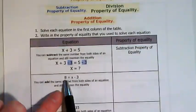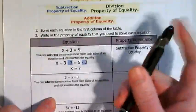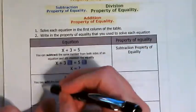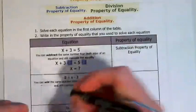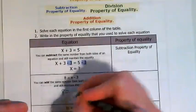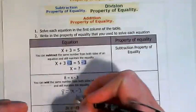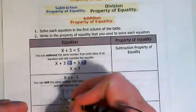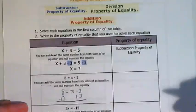For this one, I have 8 is equal to x minus 3. I can add the same number to both sides to get that. So 8 is equal to x minus 3. I can add a 3 to both sides to get that x by itself.